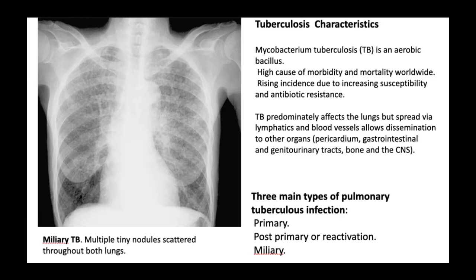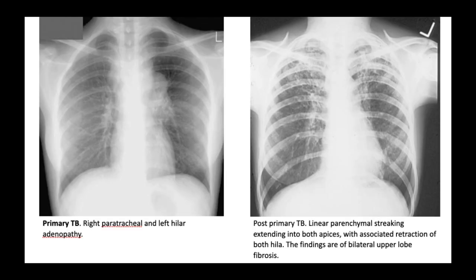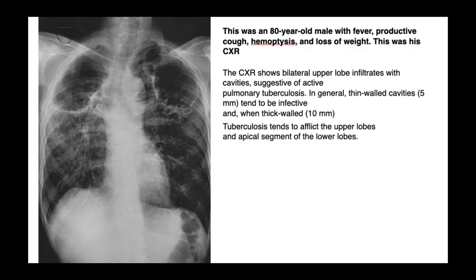TB is a contagious bacterial infection that primarily affects the lungs, commonly involving the upper lobes and lung apices. Neglecting to evaluate the apical regions may lead to a delayed diagnosis of TB, as early signs of the disease can be missed. This delay can result in the spread of TB to other individuals and more severe disease progression in the affected patient.